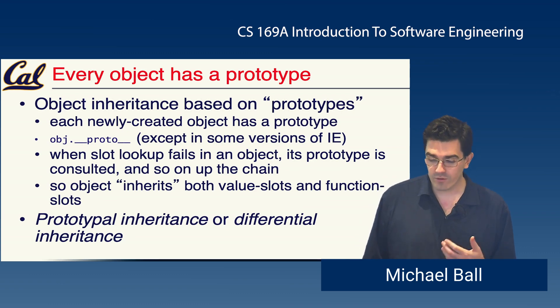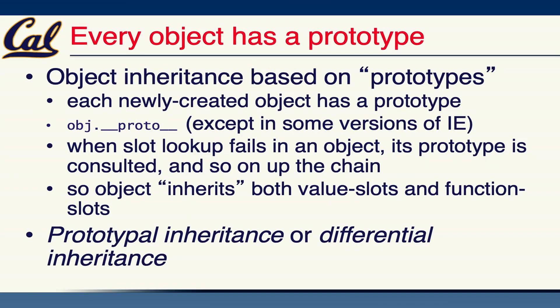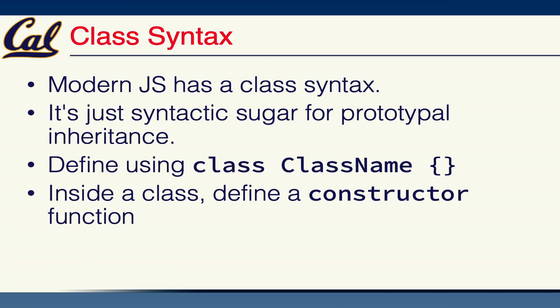This is called prototypal inheritance or differential inheritance. In practice you can use it similarly to most object-oriented interfaces, but there are some differences in terms of how it works behind the scenes. There is a class system in JavaScript. Modern JavaScript does actually have a class syntax, but really it's just syntactic sugar around the prototypal inheritance that exists under the hood. Classes in JavaScript are not quite like classes in Ruby or Python or especially actual Java, but you can write them in a somewhat similar way and you can get by most of the time sort of treating them like other classes.